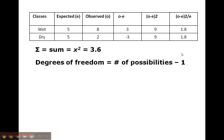The degrees of freedom is the number of possibilities minus one. So in this case, two minus one equals one degree of freedom.